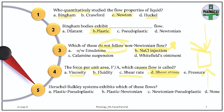Question 5. Herschel-Bulkley systems exhibit which of these flows? The answer is plastic pseudo-plastic flow — it is by and large a combination of plastic and pseudo-plastic flow. Plastic requires a yield value to start flowing. In pseudo-plastic, viscosity decreases as shear stress increases. Similarly in Herschel-Bulkley systems, it requires a yield value like a plastic system, and its viscosity will also decrease with increase in shear stress.